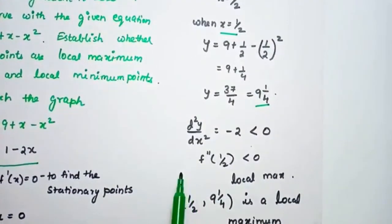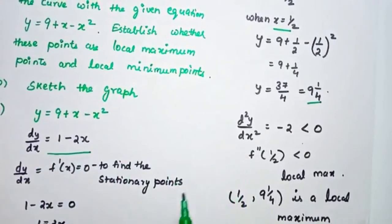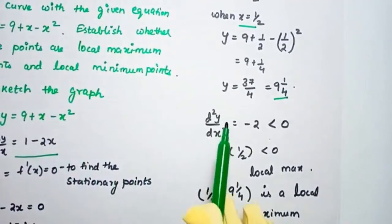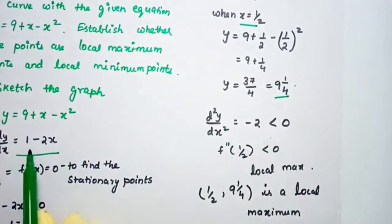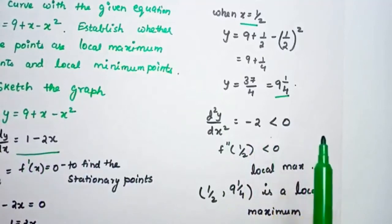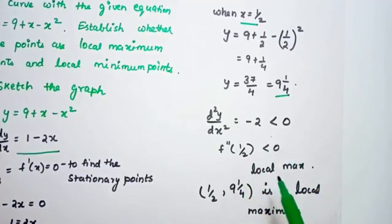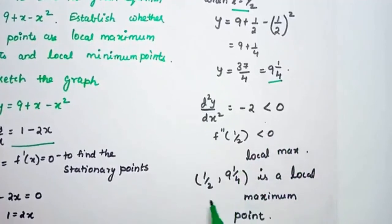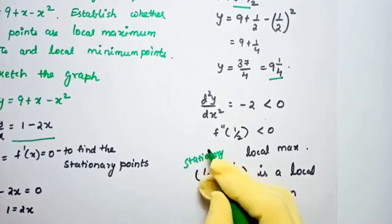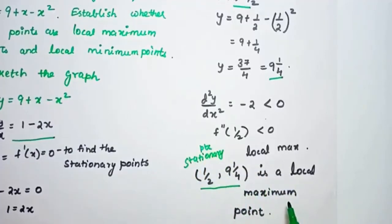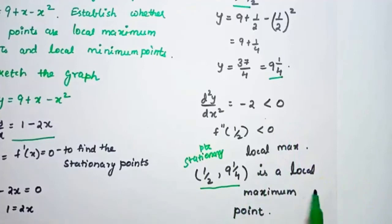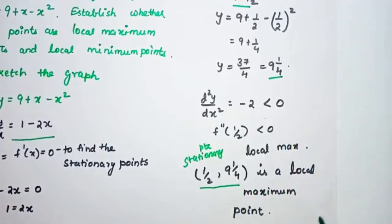Differentiating dy/dx = 1 − 2x again gives d²y/dx² = −2, which is less than 0. Since the second derivative is less than 0, we confirm the stationary point is a local maximum. Therefore (1/2, 9¼) is the local maximum point.